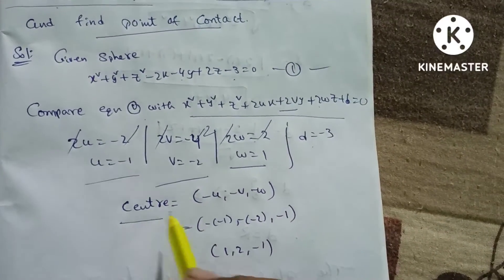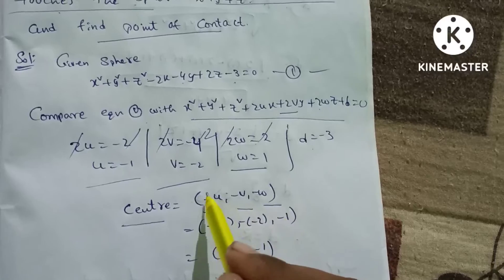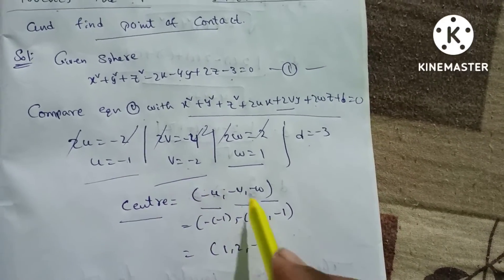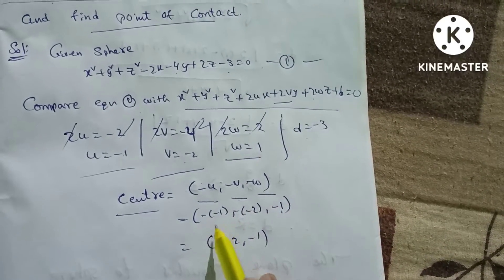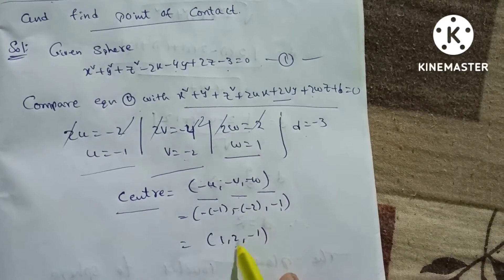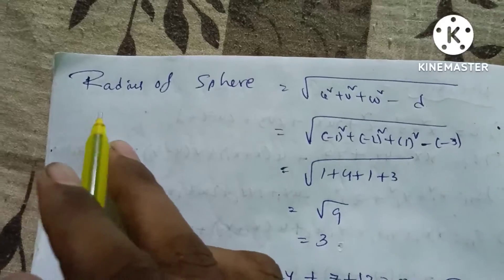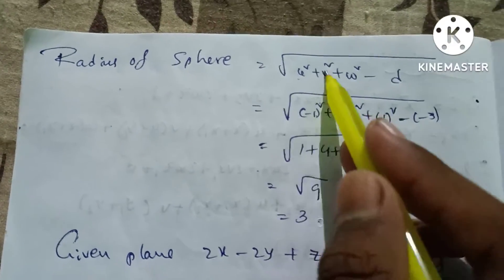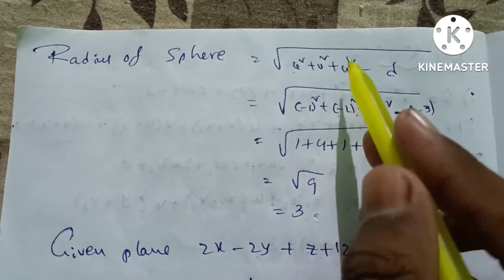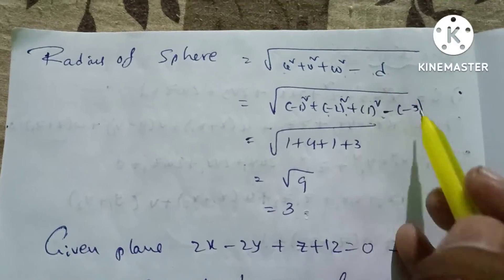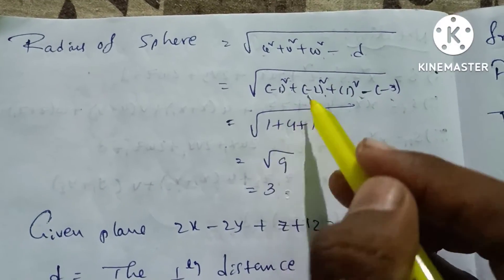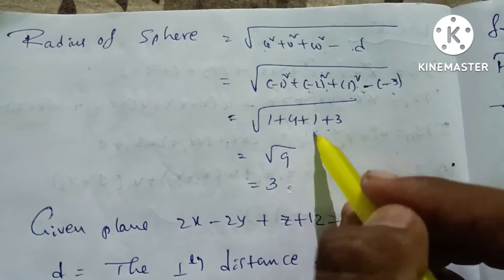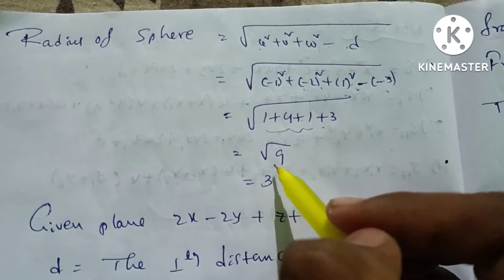Center of the sphere formula is (minus u, minus v, minus w), giving center equal to (1, 2, minus 1). Radius formula: square root of u squared plus v squared plus w squared minus d. So radius equals square root of 1 plus 4 plus 1 plus 3, which equals square root of 9, so radius R equals 3.